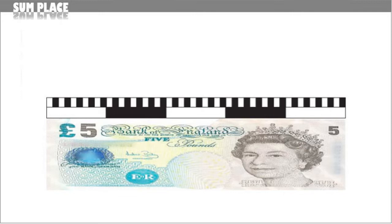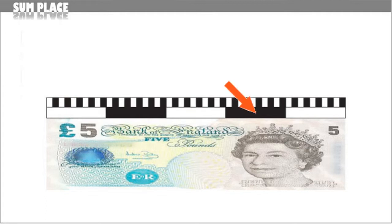You can see that I've stretched the £5 note to fit the number line. Immediately above the £5 note, the number line is divided into five sections — 1, 2, 3, 4 and 5 — and each one of these corresponds to £1. There are five of them, so that's £5.